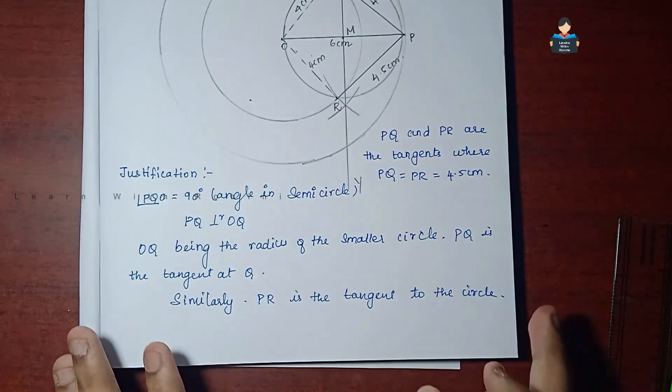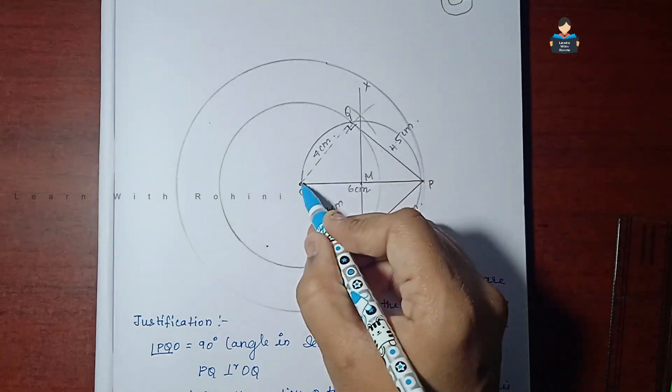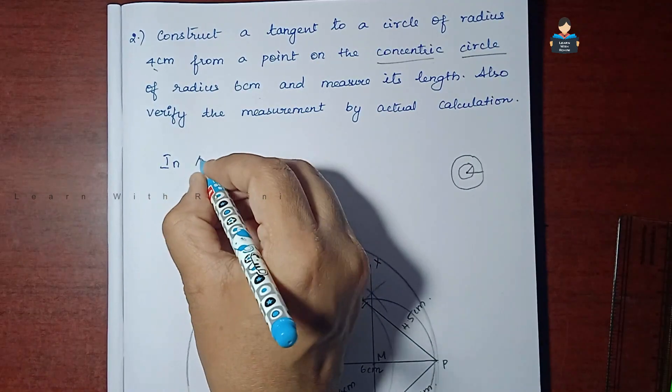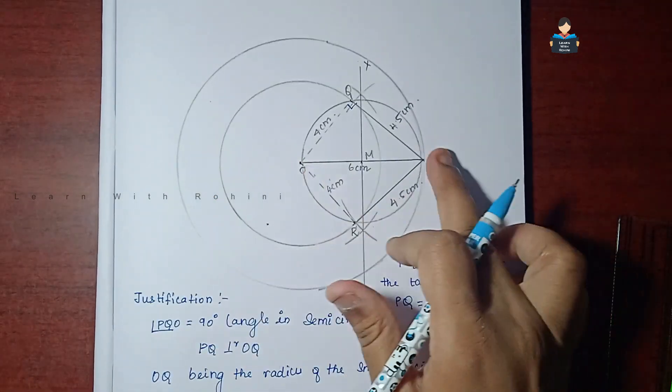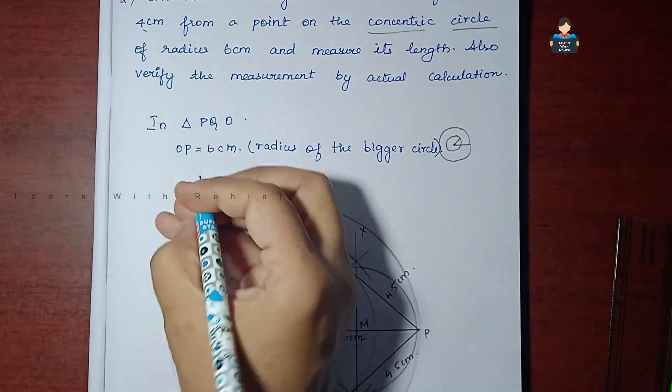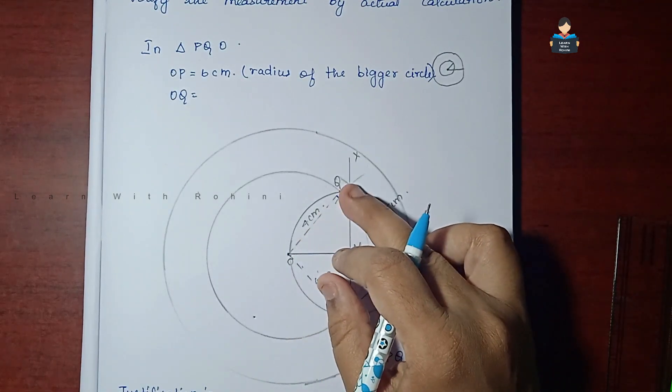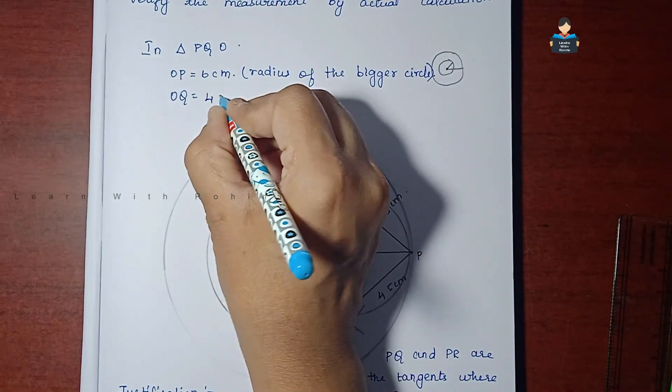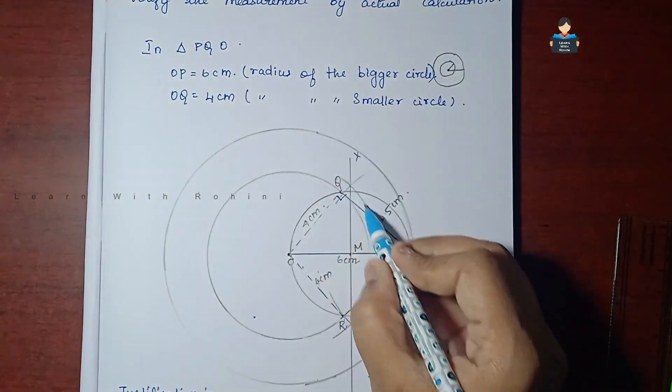So in triangle PQO, OP is 6 cm, radius of the bigger circle. Next, OQ is radius of smaller circle, 4 cm. So right triangle.